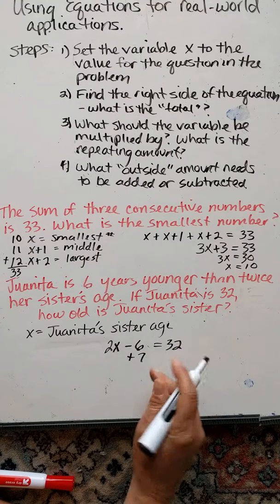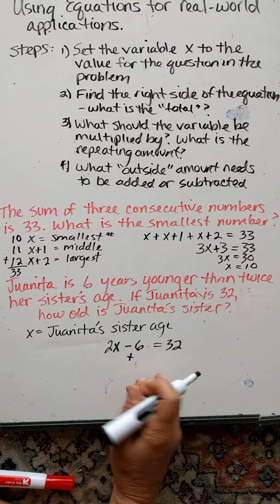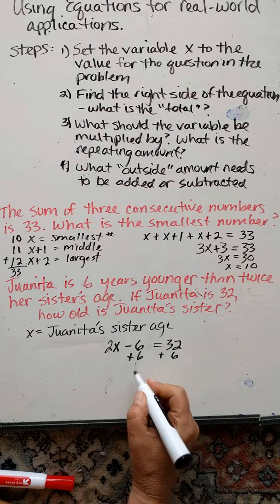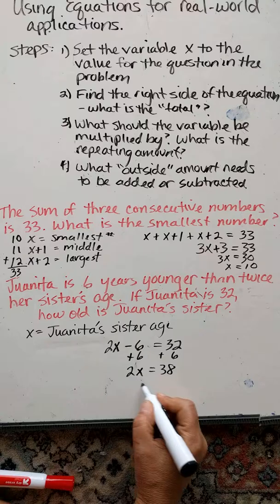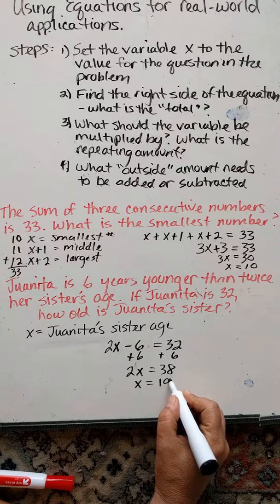If we solve this equation, we add 6 to both sides. And we get 2x equals 38. Divide both sides by 2, and we get x equals 19.